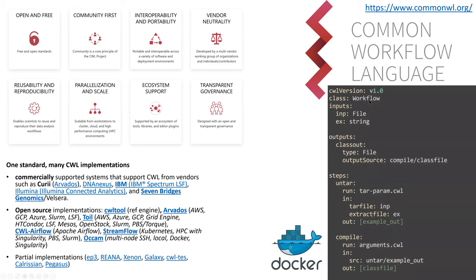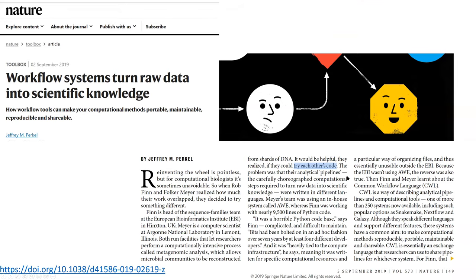A basic CWL workflow is just a listing of steps — this is your formal language representation of a workflow. In this case, a very simple one with just two steps, because the full metagenomics workflow has more steps. The idea is that you split out the different command line tools you are executing.